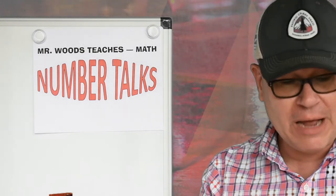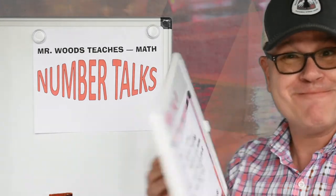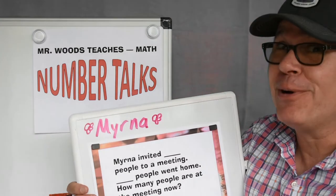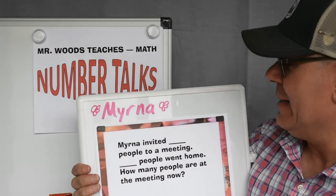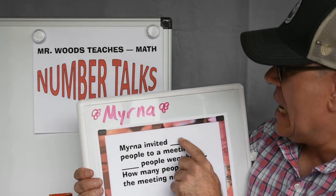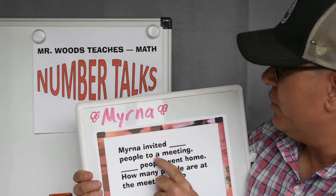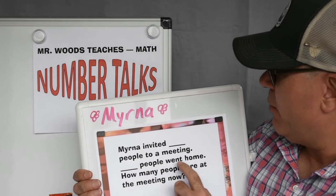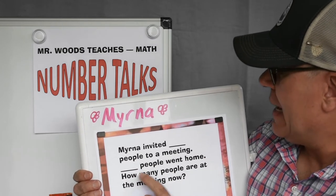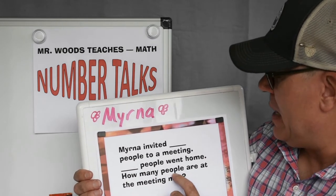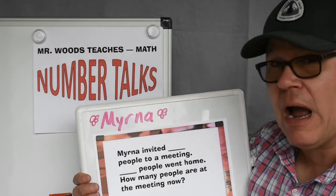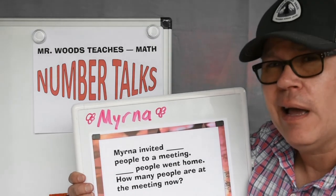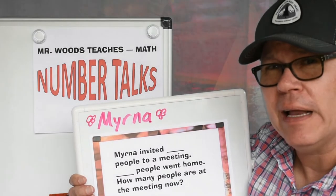Today I'm with my friend Myrna. She's a really nice lady. Myrna invited nine people to a meeting. Seven people went home. How many people are at the meeting now? How would you figure that out?